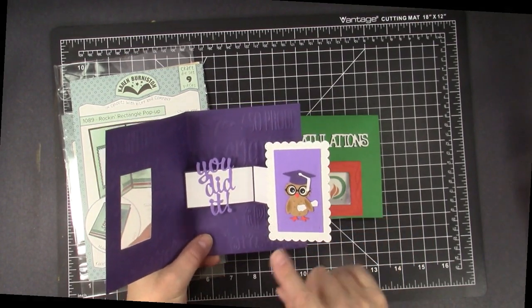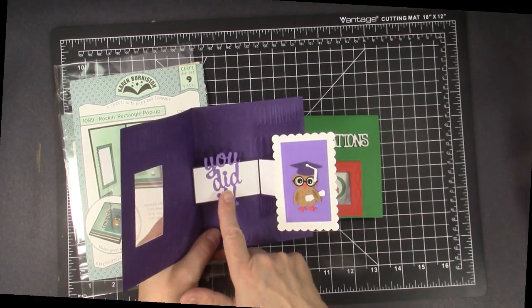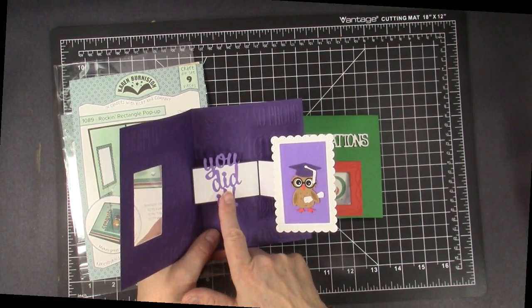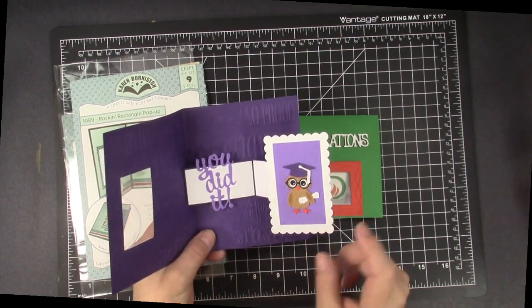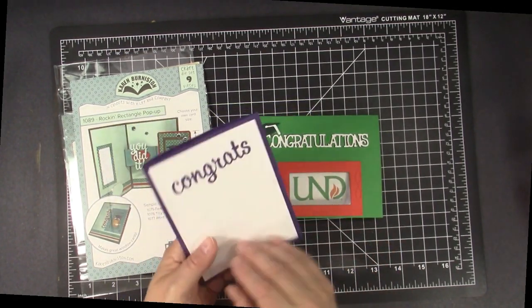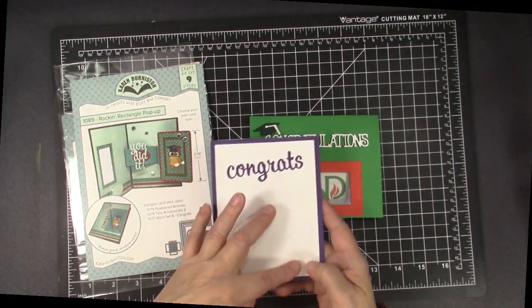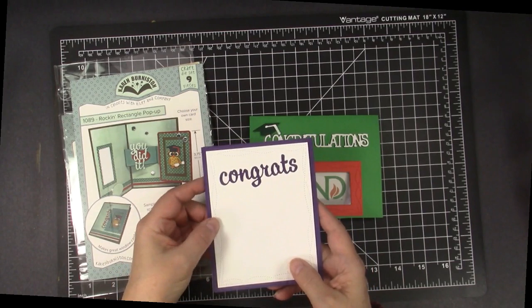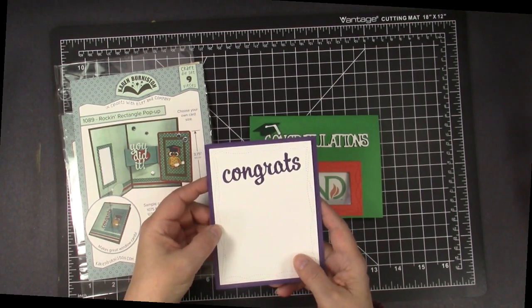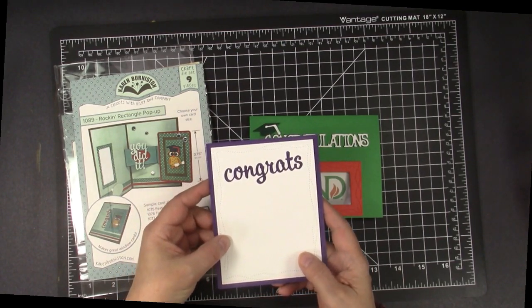I'll show you what die sets I used. This is a new word die set from Karen Burniston, and that is some cute animals. Then on the back I put Congrats, and the wonky rectangle die set there is from Gina Marie Designs.